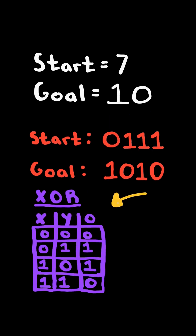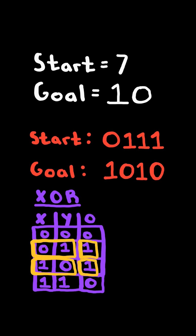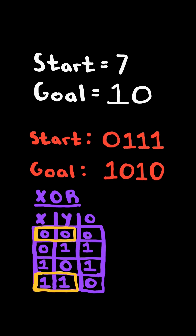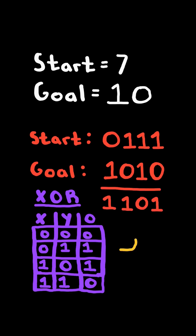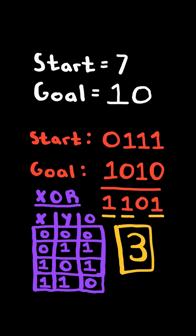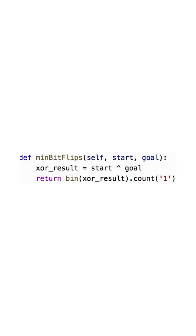First, consider the XOR truth table. If two bits are different, then the result is a one. Otherwise, if the two bits are the same, the result is a zero. So if we XOR start and goal together, this shows which bits are different. We can then count the number of ones in the result, and this will be the total number of bits that need to be flipped. And here's the code to do so.